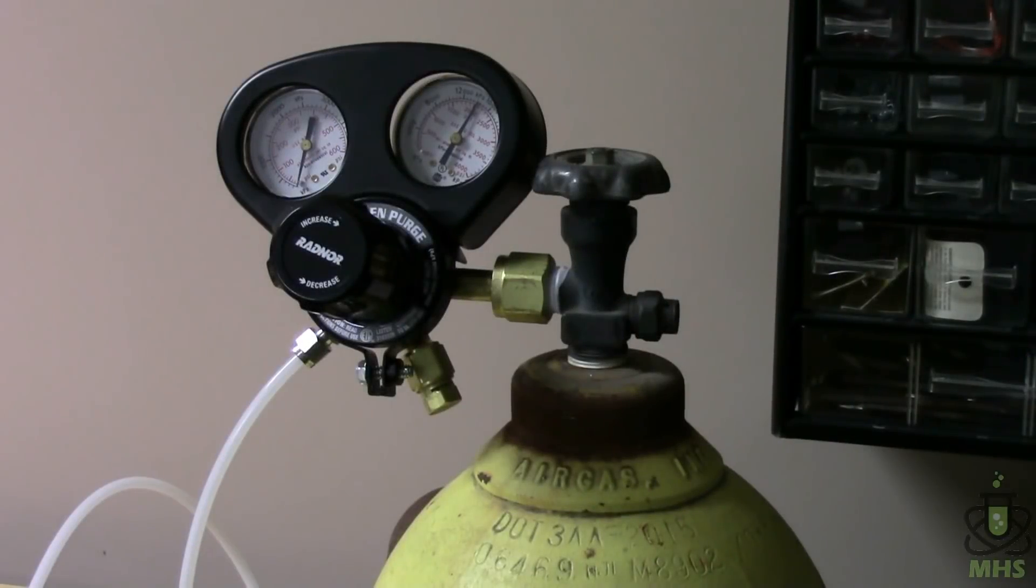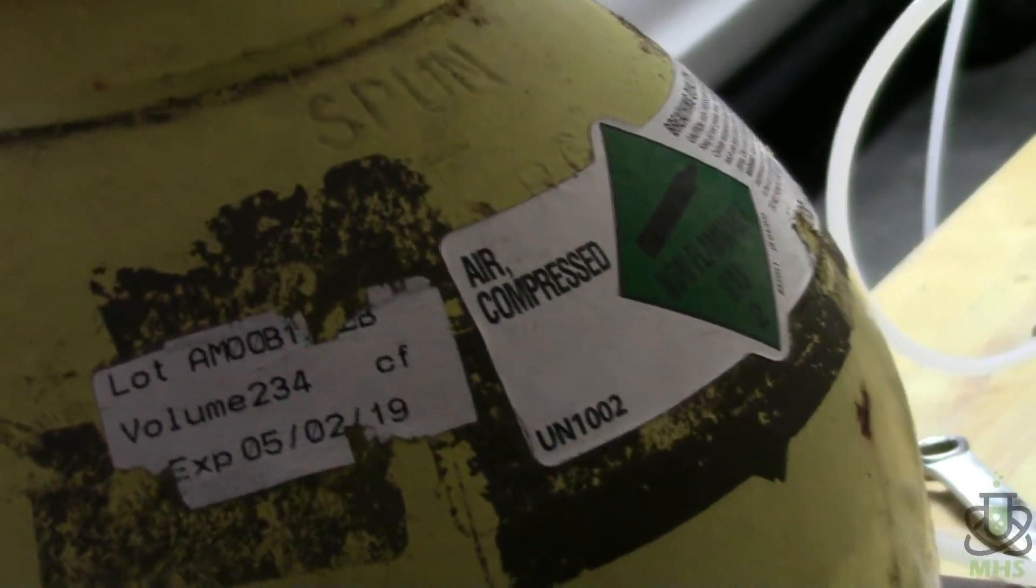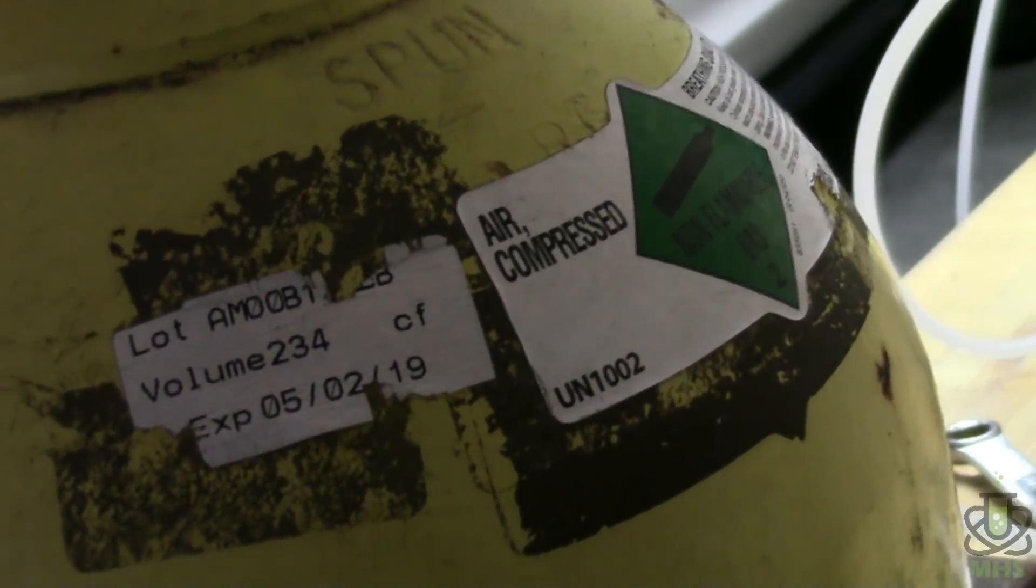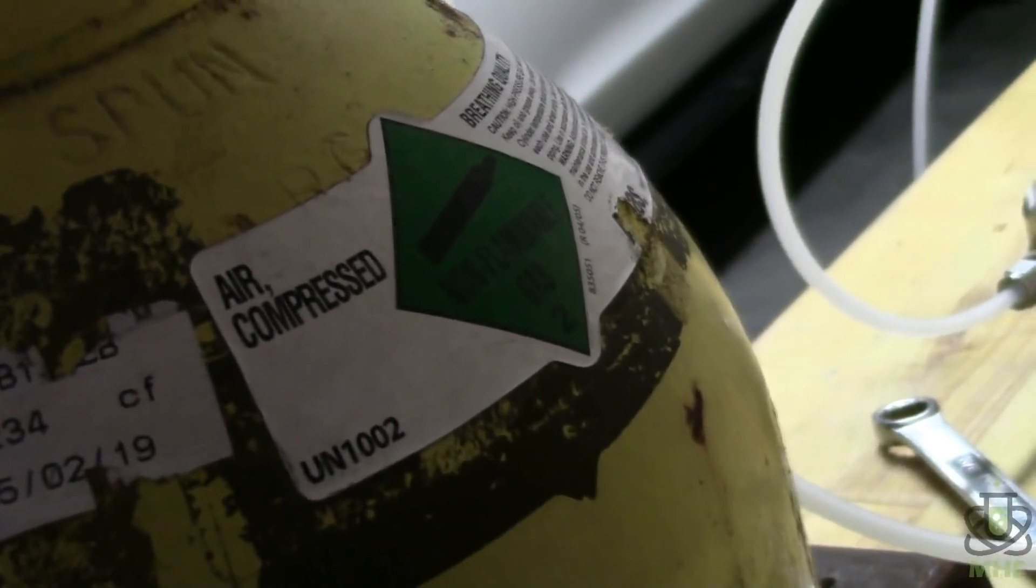So here's the first piece in the system. This is a size 200 compressed air cylinder that I bought from my local air gas store and that's attached to a regulator which I also bought from air gas. And then if we come around to the back of the tank you can see that it is in fact compressed air.